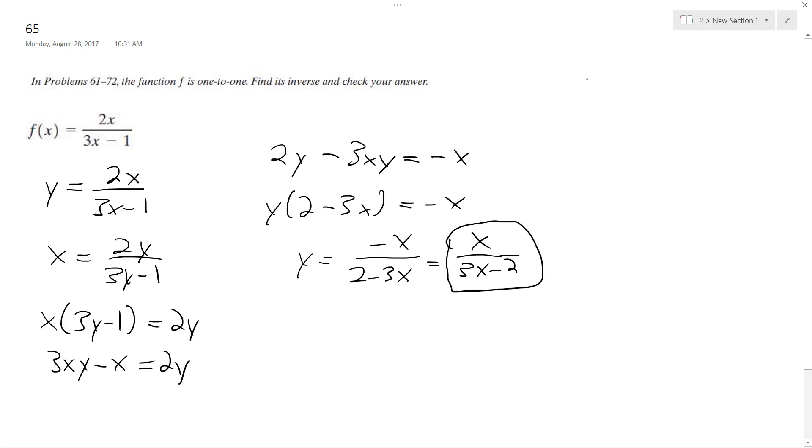So now I'm going to plug it in. F of f inverse of x. So I'm going to get 2 times x over 3x minus 2, over 3 times x over 3x minus 2, minus 1.